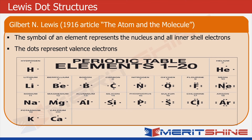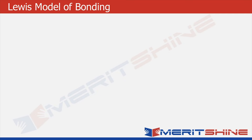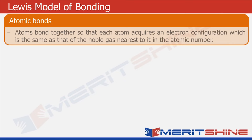Lewis suggested atoms bond together so that each atom acquires an electronic configuration the same as that of the noble gas nearest to it in the atomic number.